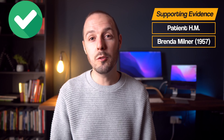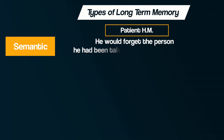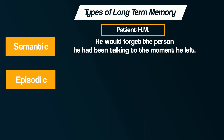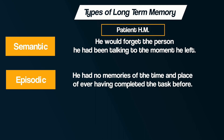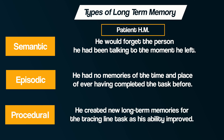However, astonishingly, each time he came to do the task he had no memory of ever having done it before — no episodic memories. Brenda Milner concluded from the case of HM that there are different types of long-term memory: semantic memories, because he would forget the person he had been talking to the moment they left; episodic memories, because he had no memories of the time and place of completing the task; and procedural memories, because he created new long-term memories for the tracing task as his ability improved.